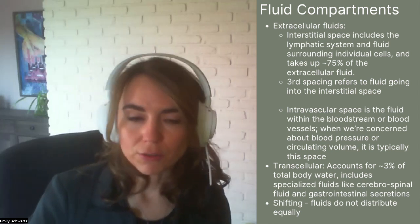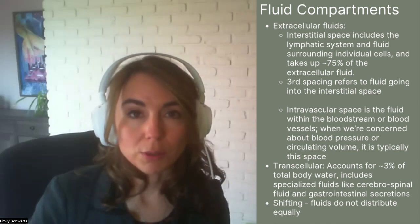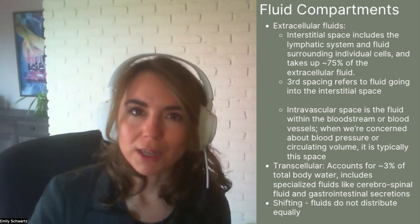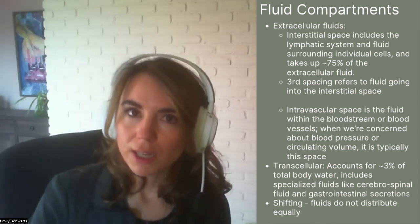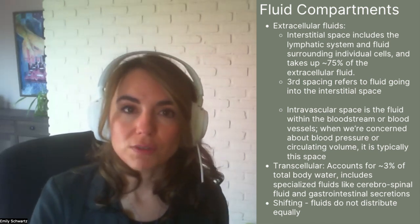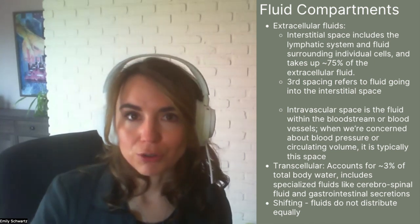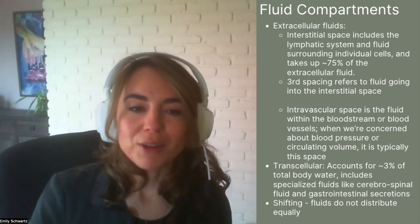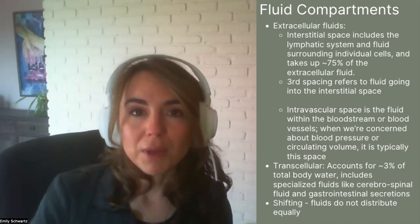We also have the transcellular fluid compartment, which accounts for only about 3% of total body water and includes specialized fluids like cerebrospinal fluid or gastrointestinal secretions. The reason it's important to conceptualize these different fluid compartments is because of the concept of shifting. When we're looking at different electrolyte abnormalities, acid-base disturbances, and fluid imbalances, we're often looking at shifting of fluid between these compartments. IV fluids are not distributed equally amongst these compartments, and different fluids are often chosen based on how they will distribute.